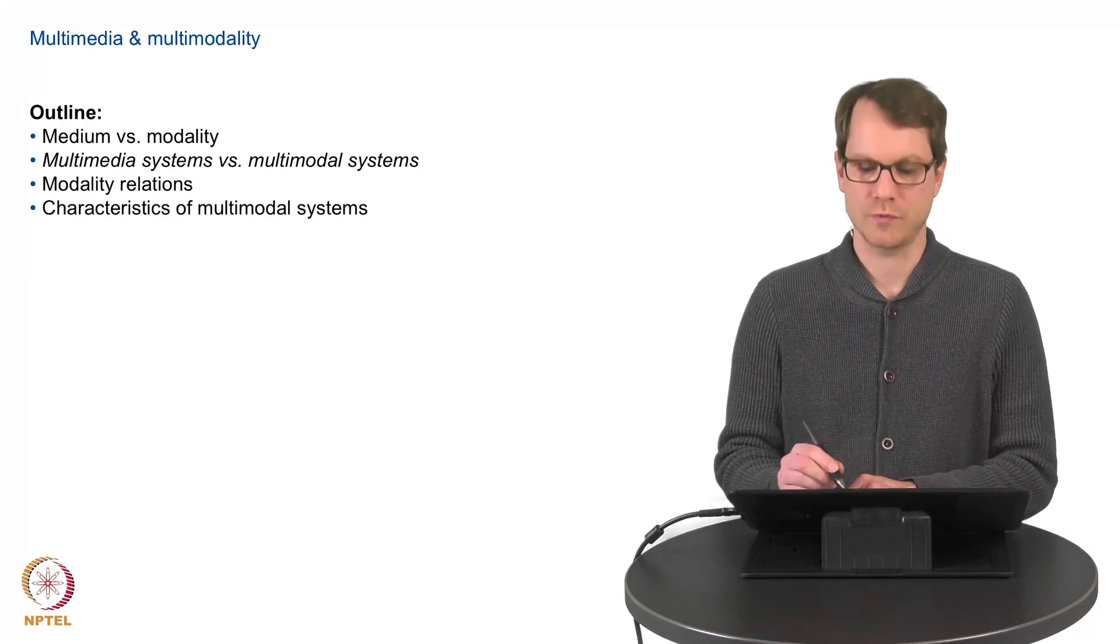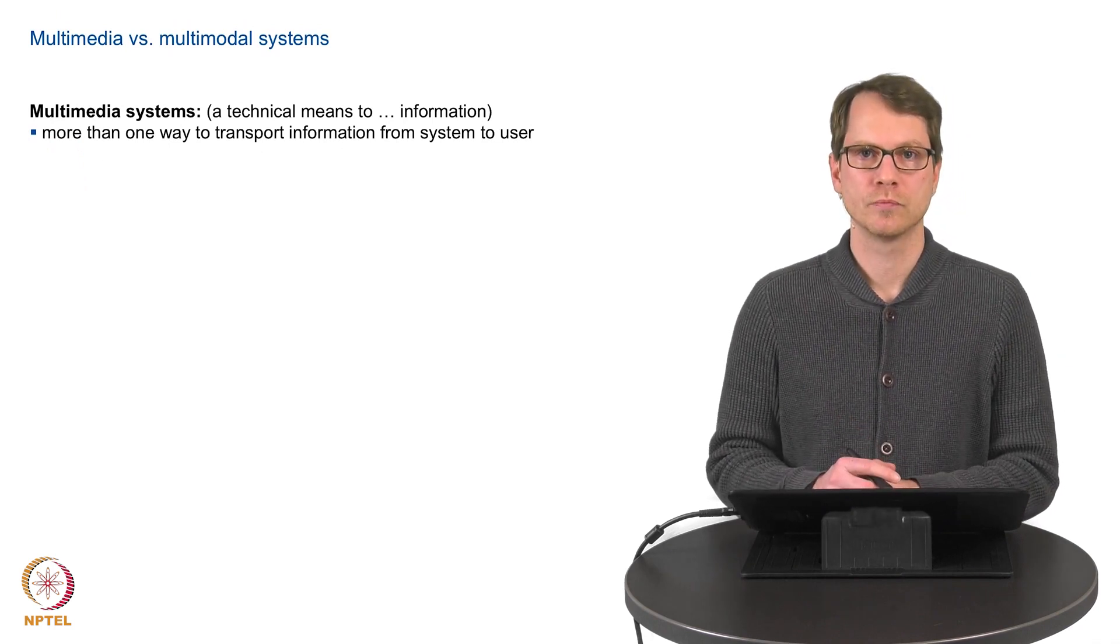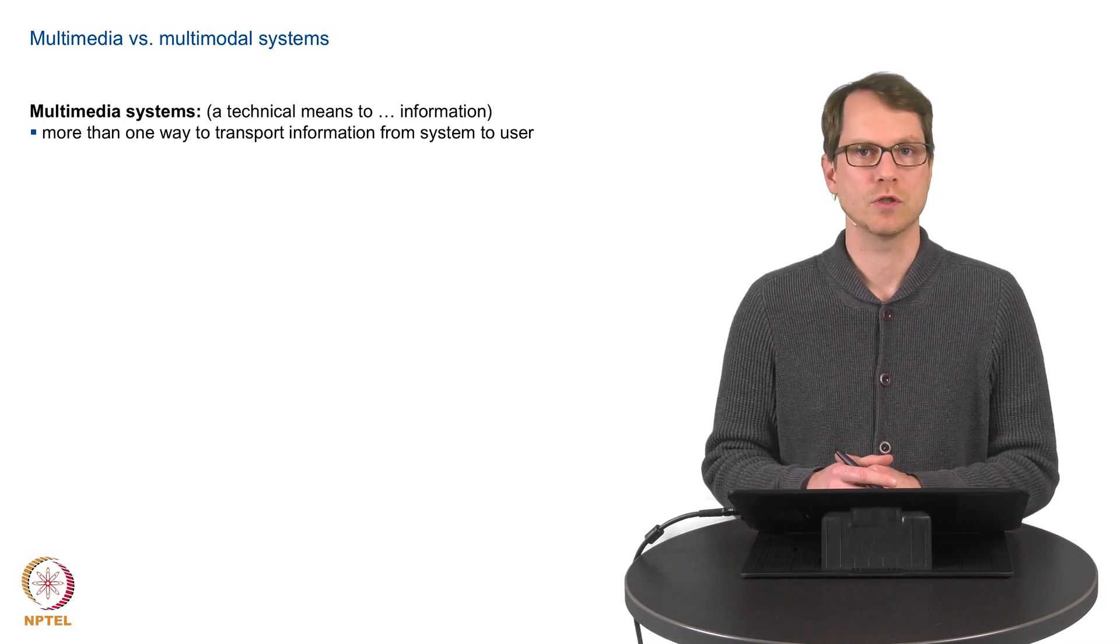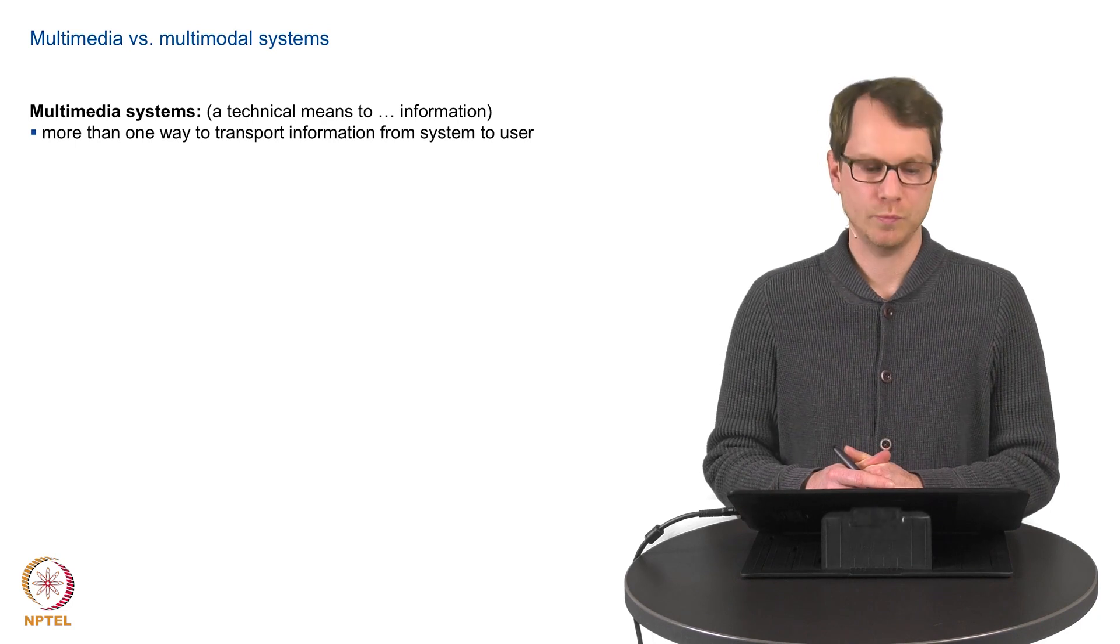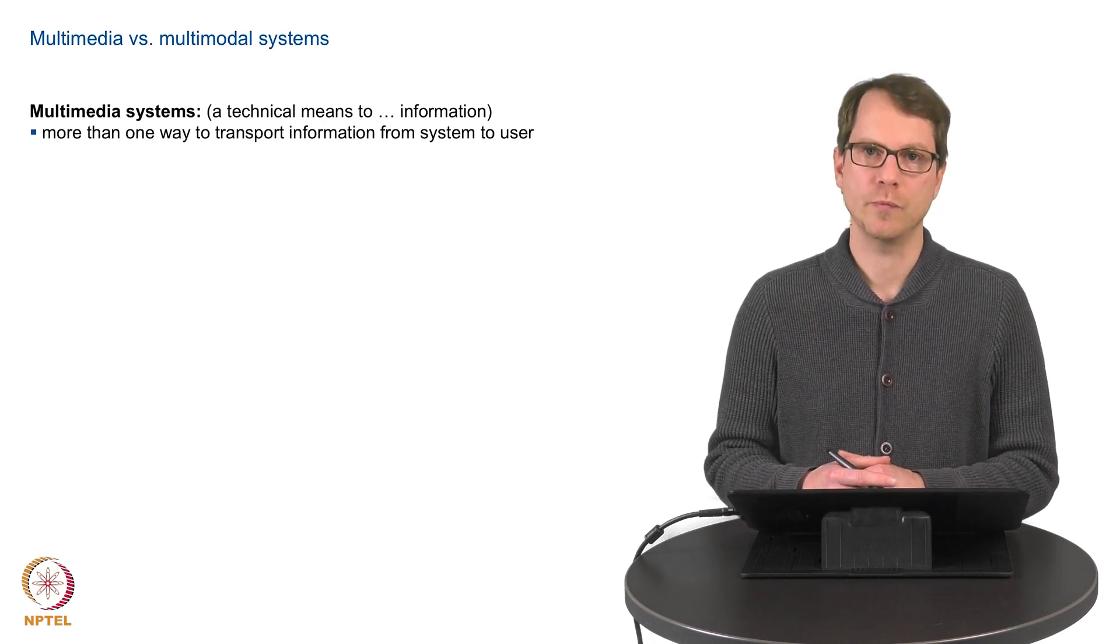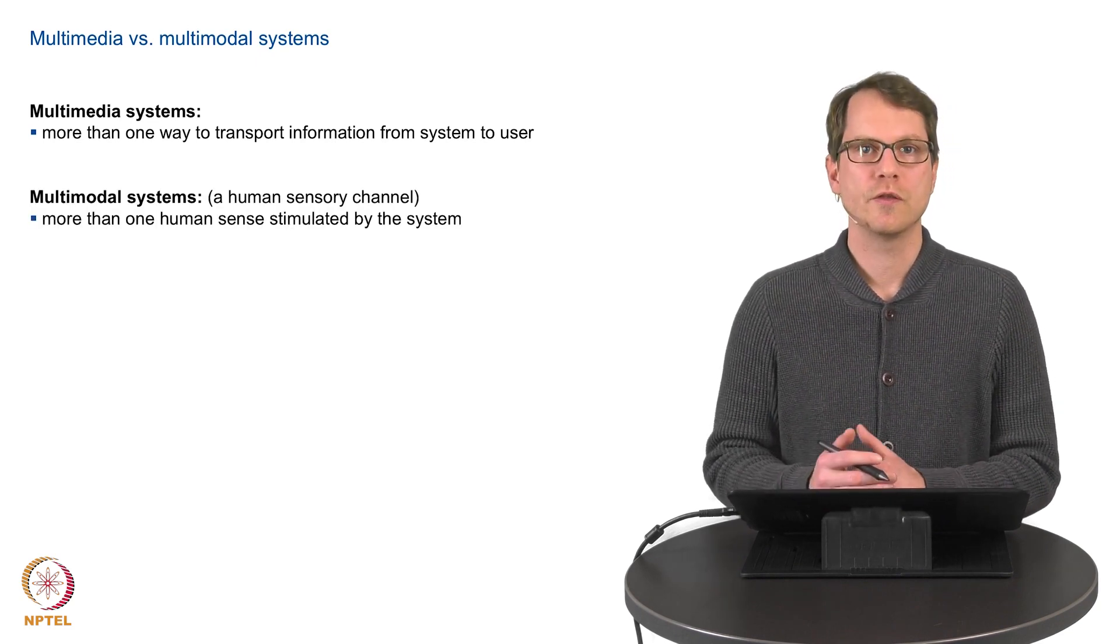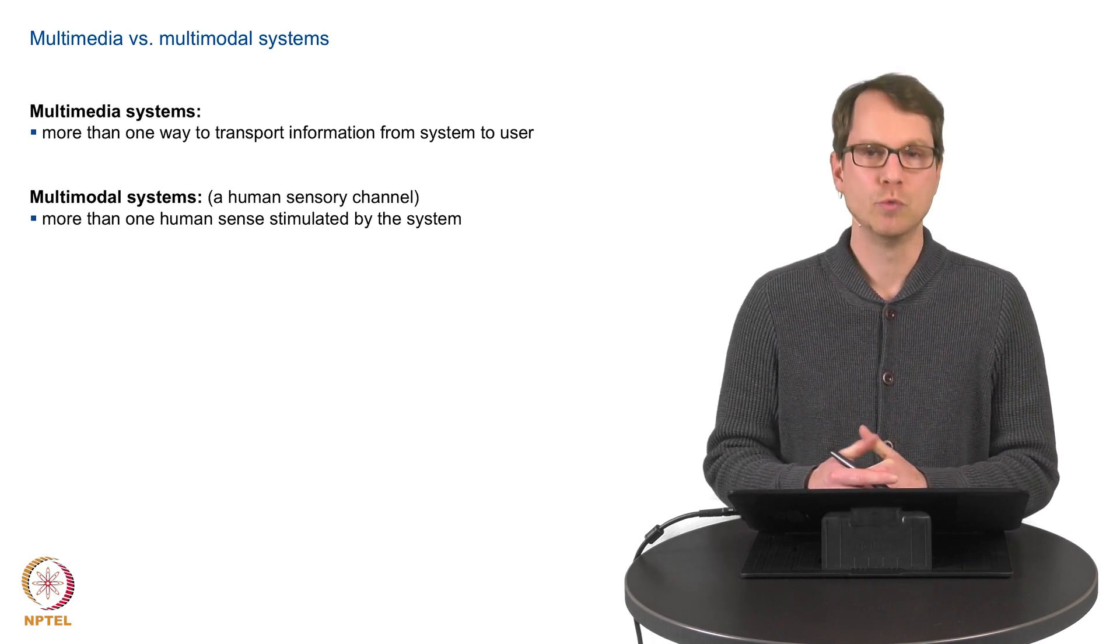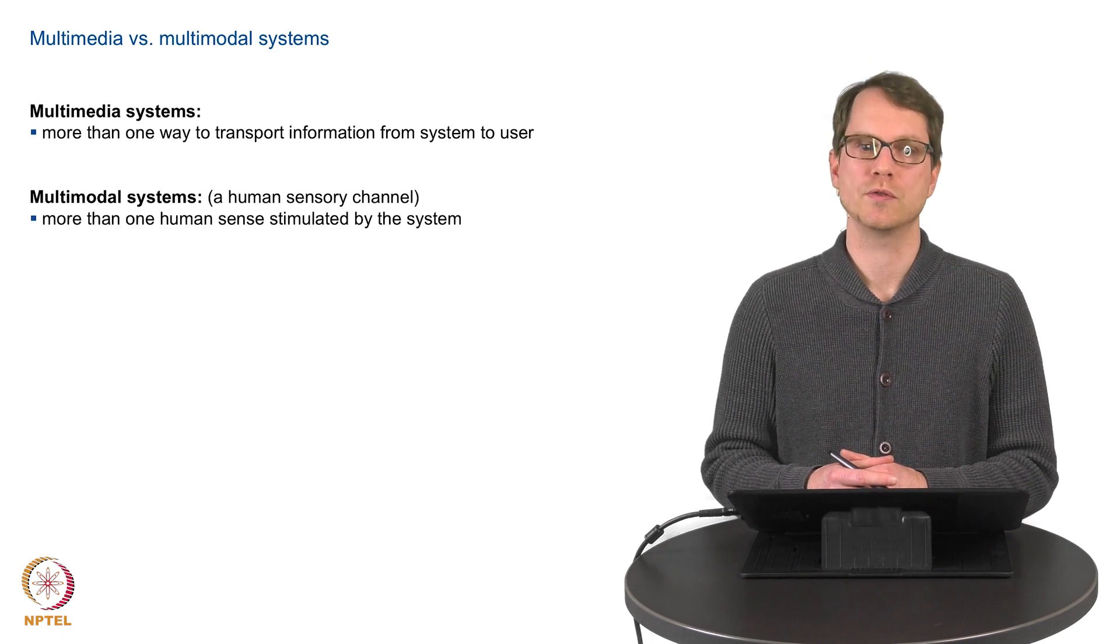Let's continue with the actual systems. Following the definition of a medium, which is a technical means to store, transport, and convey information, what is actually a multimedia system? It would be a system with more than just one way to transport information from the system to the user. Following the definition of modality, which is a human sensory channel, a multimodal system would be a system that can stimulate more than one human sensory channel.